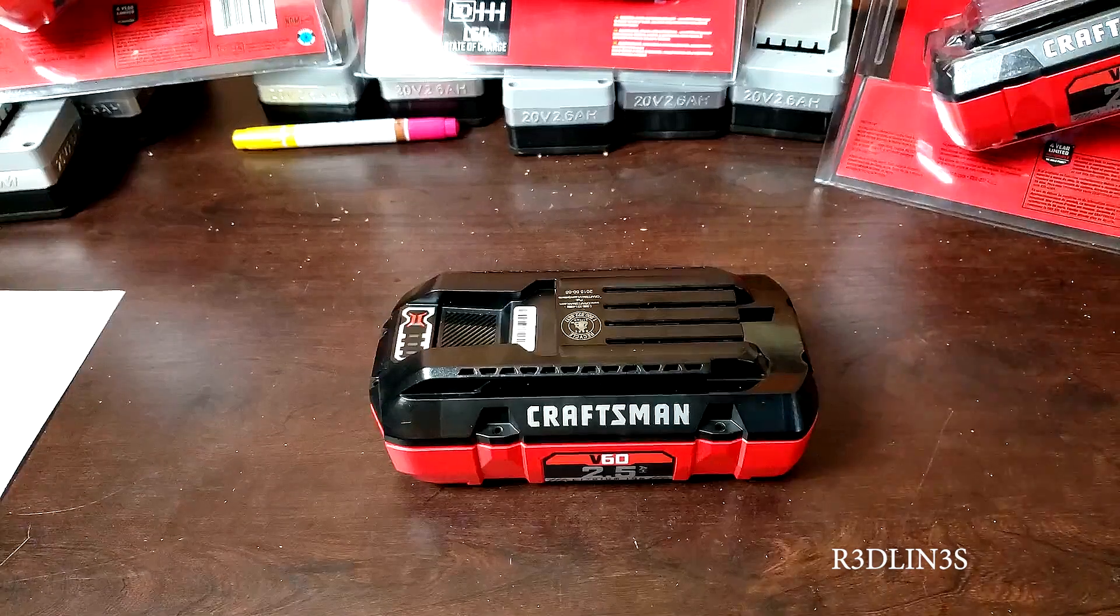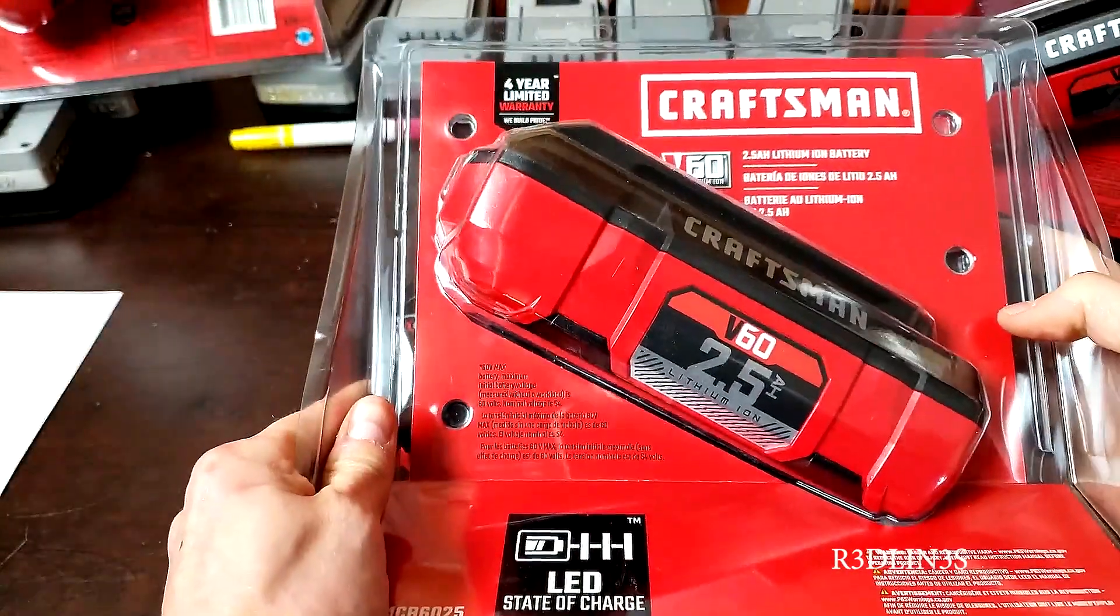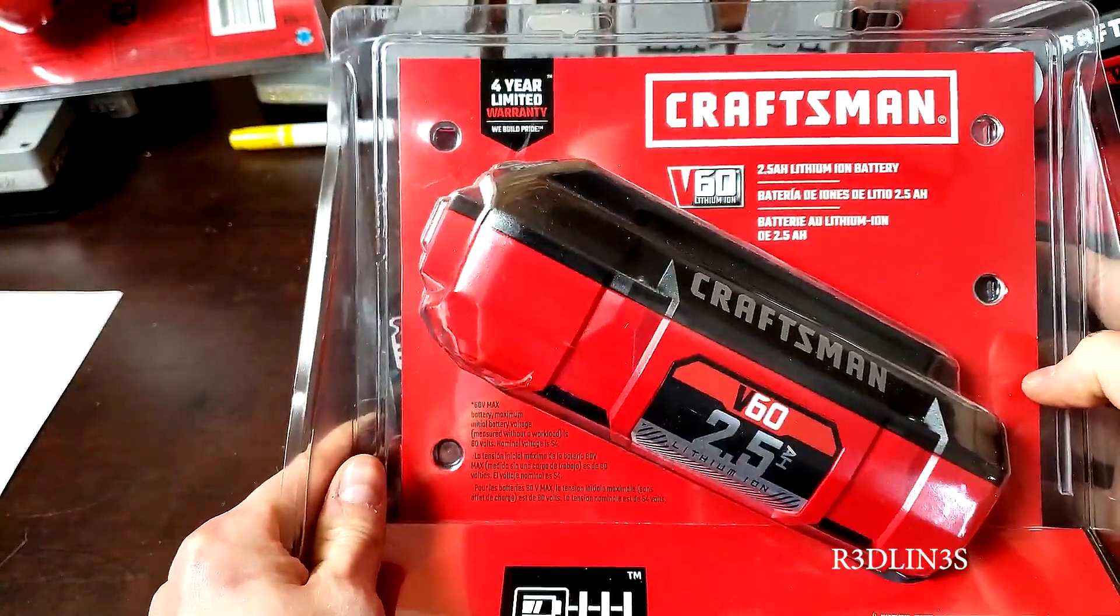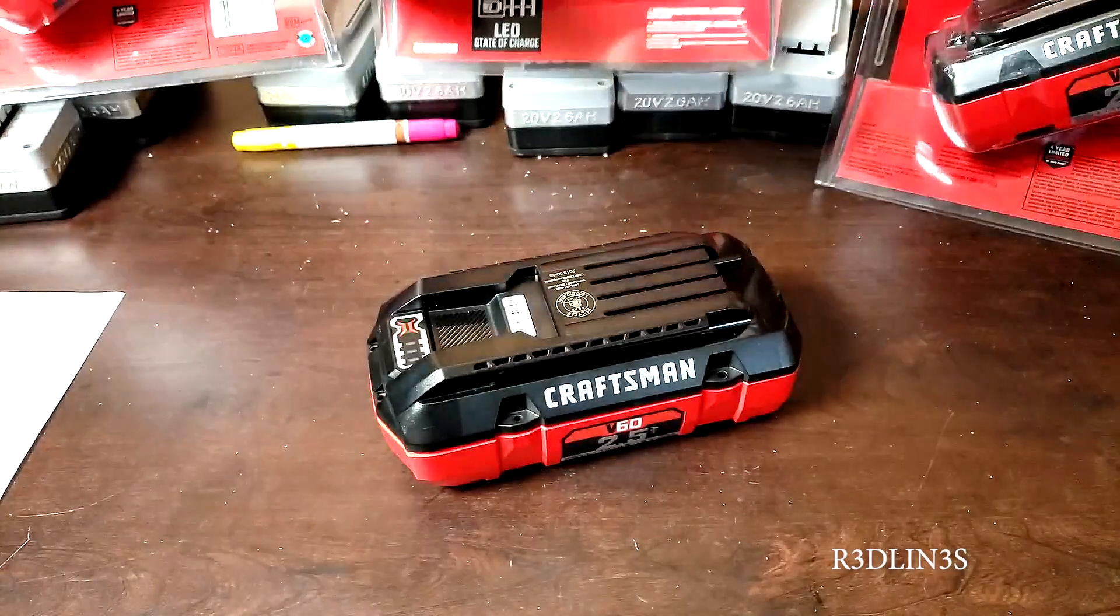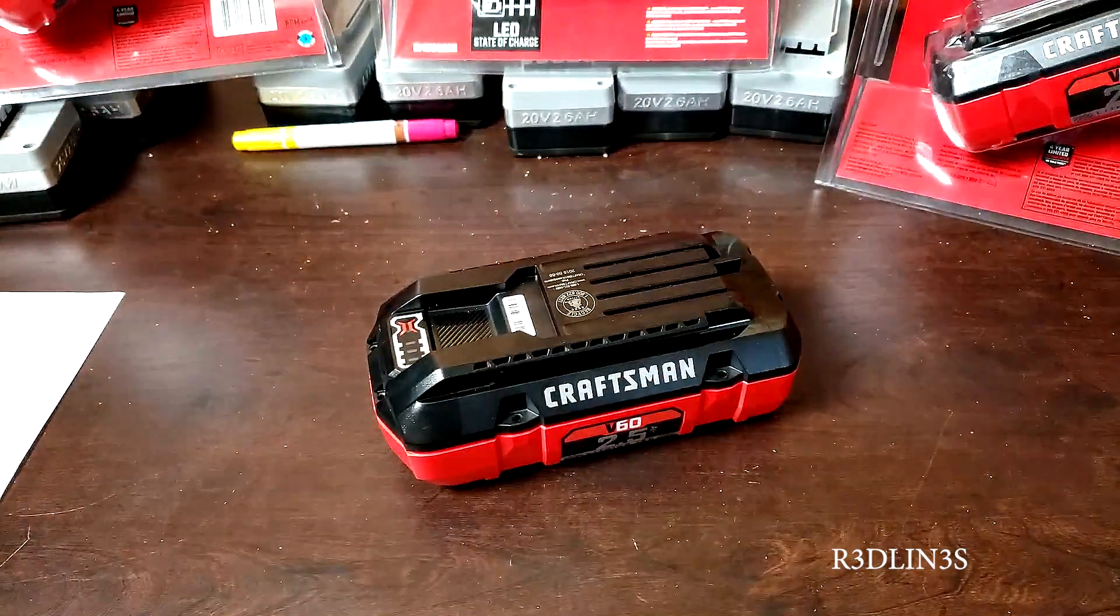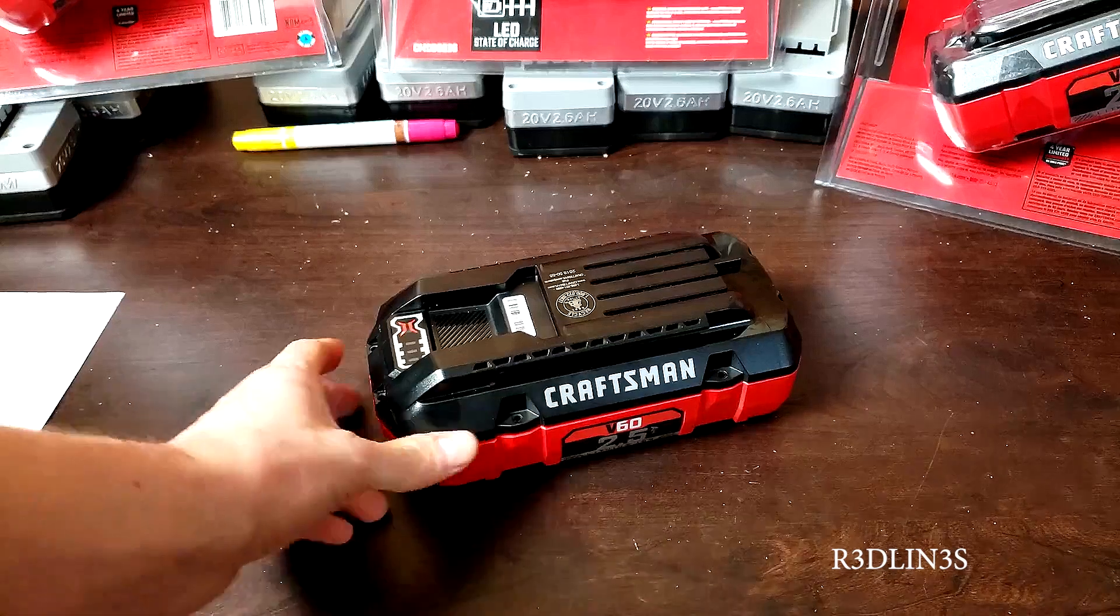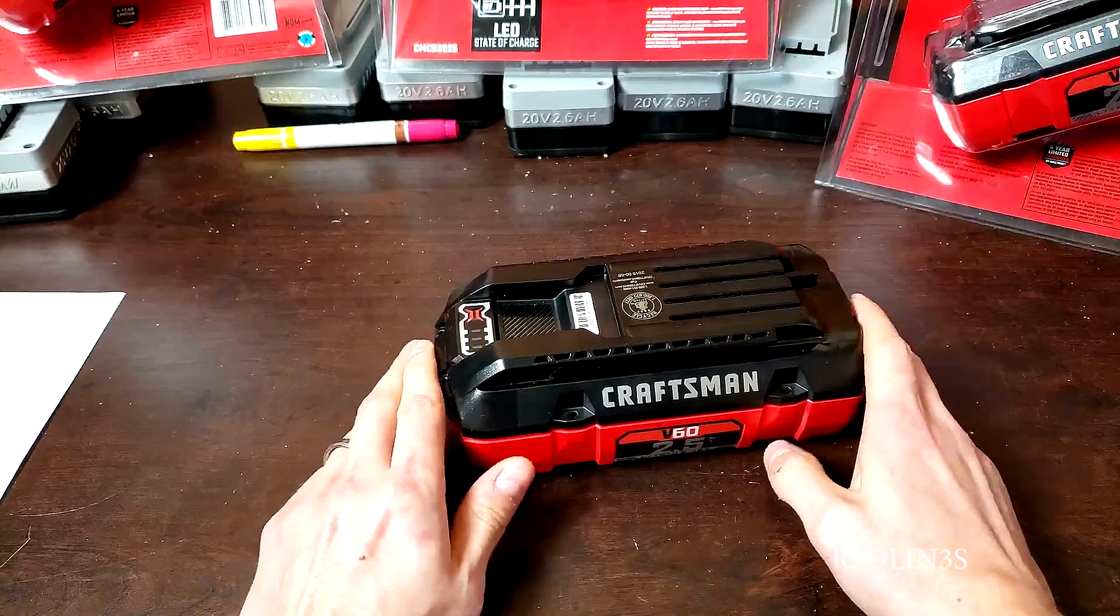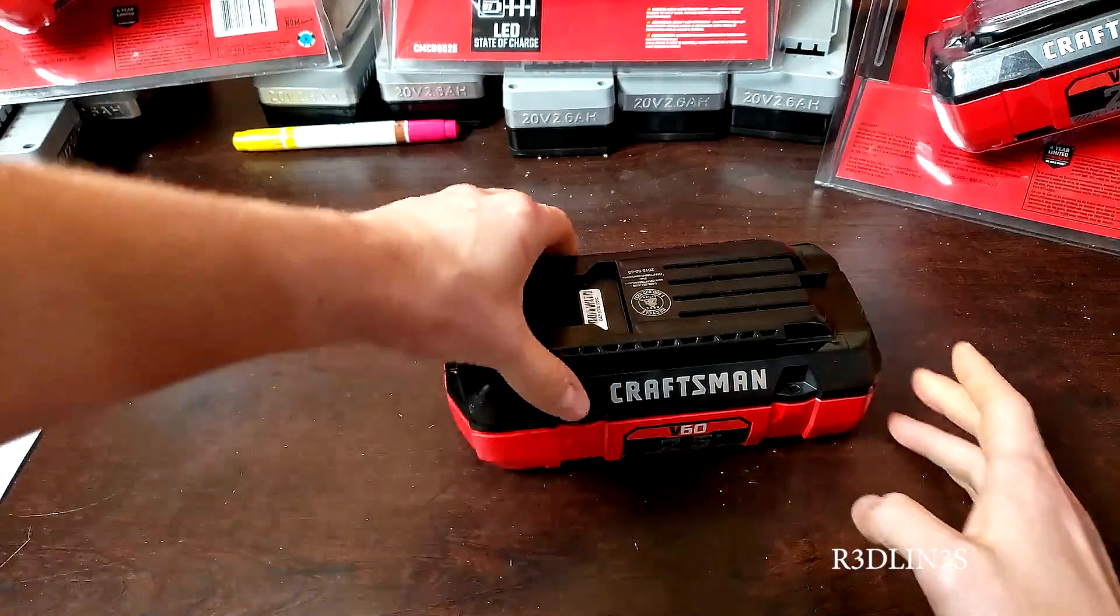Hello everybody, my name is Aaron and today we're going to be looking at the 60 volt 2.5 amp hour Craftsman battery. From the name, we know it is at least 15 batteries in series and it's 2.5 million 100 milliamps each. I doubt there are two rows of 15 in here, there's no way.